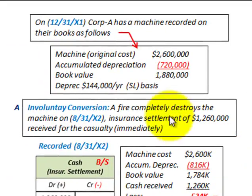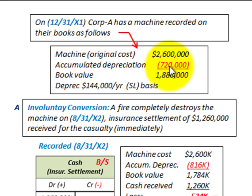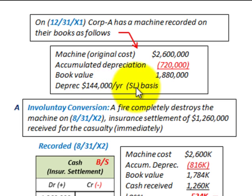Let's go back and look at our basic example. On 12/31/X1, Corporation A has a machine recorded on their books. We have the machine's original cost less its accumulated depreciation, which gives the book value of the machine as of 12/31/X1. The depreciation is based on $144,000 per year on a straight-line basis.